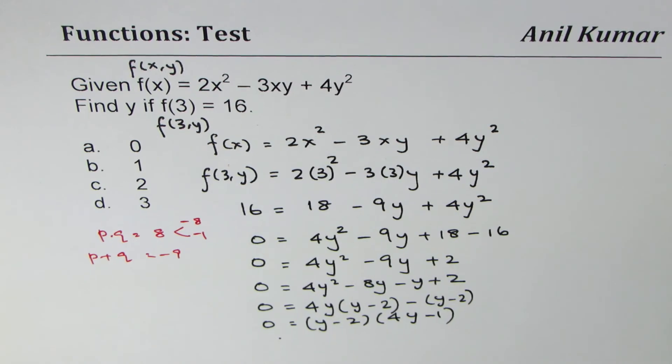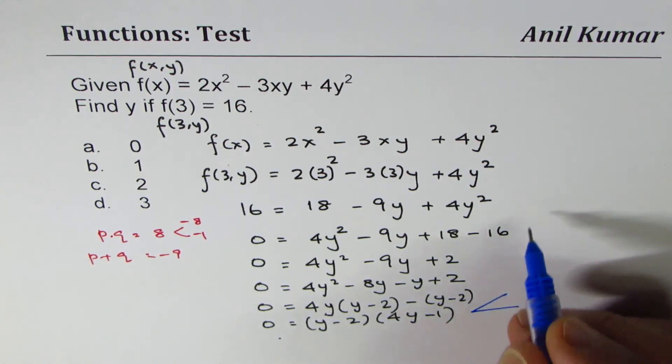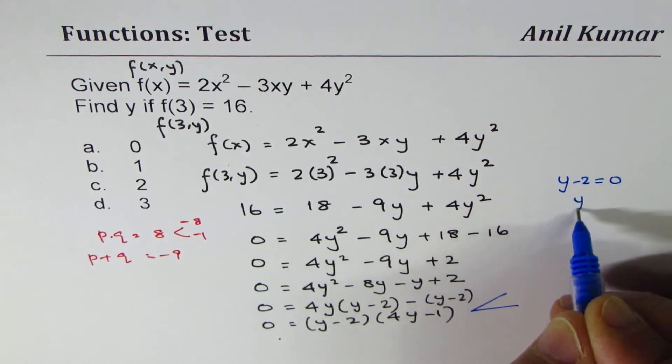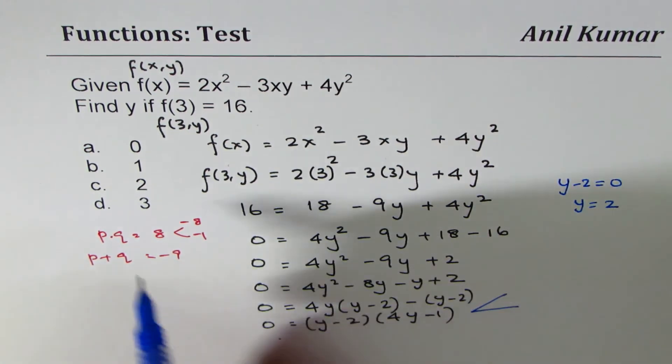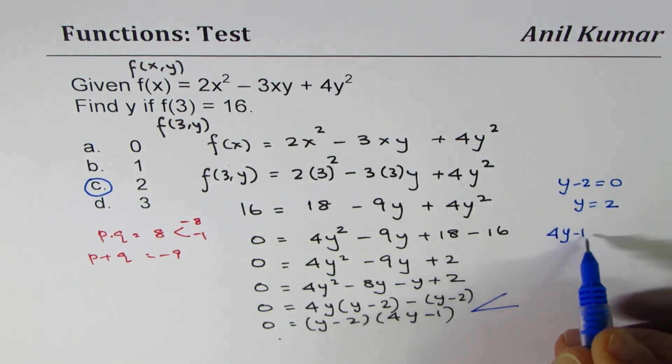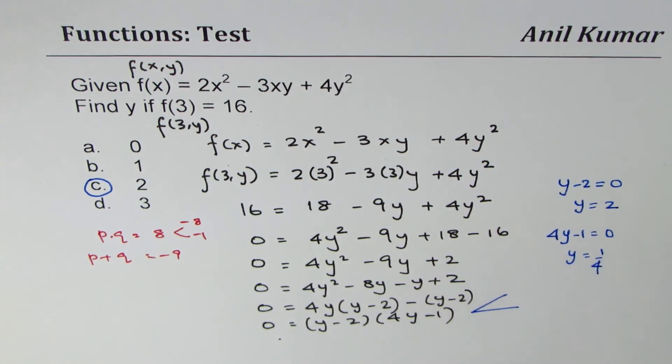From this factored form 0 = (y - 2)(4y - 1), we get two solutions. y - 2 = 0 gives us y = 2, and that is one of the solutions, so we will take C. The other is 4y - 1 = 0, which gives y = 1/4, correct?